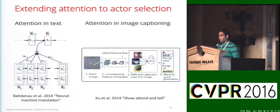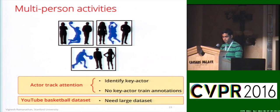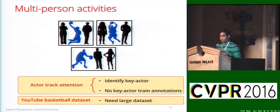Attention has been widely used in neural machine translation as well as image captioning works in the past. We are going to bring this idea to videos for localizing key actors in events and actions, using attention to identify the actor track which is responsible for the action.